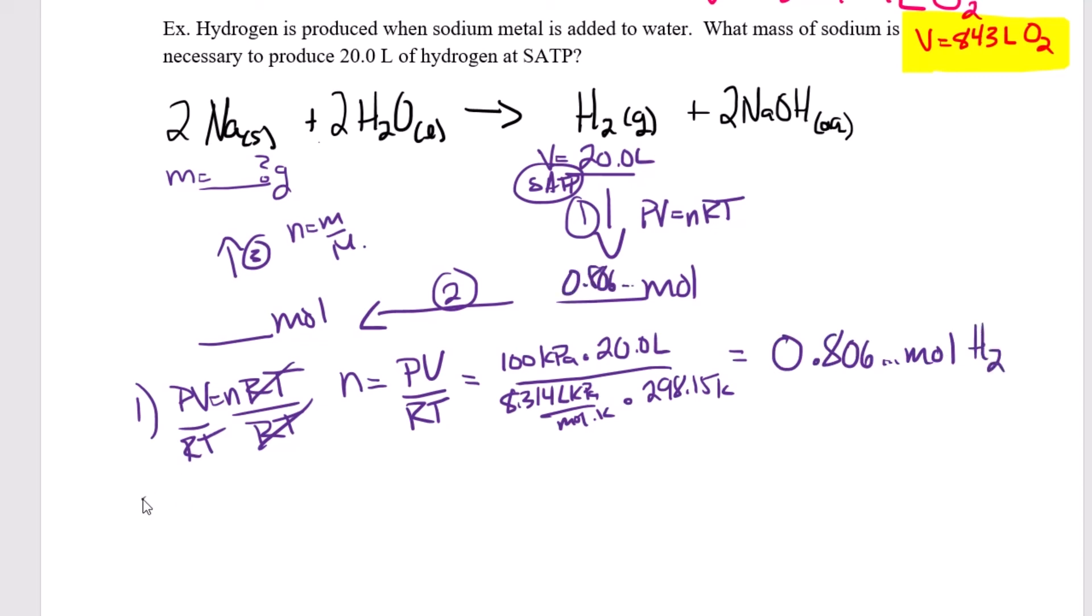So now we can use the mole ratio to figure out how many moles of sodium would be required to make that many moles of hydrogen. These are moles of hydrogen. I need to figure out one mole of hydrogen is produced every time two moles of sodium are consumed. So we're multiplying this by two, which gives me 1.6 and some change moles of sodium.